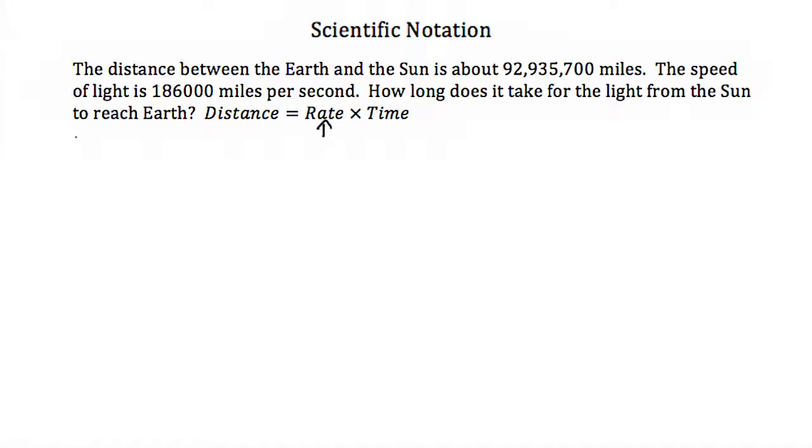And then we're reminded that distance is equal to rate times time, and remember rate is our speed. So if that's the case, that just means our time then is equal to distance divided by our rate or our speed, and all I did was divide by the rate. So with this we can find how long it takes for the light to reach the earth.